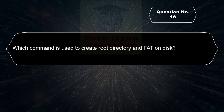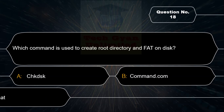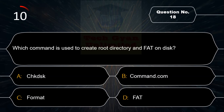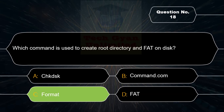Which command is used to create a root directory and FAT on disk? Option A: CHKDSK, Option B: Command.com, Option C: Format, Option D: FAT. Correct answer is Option C — Format.